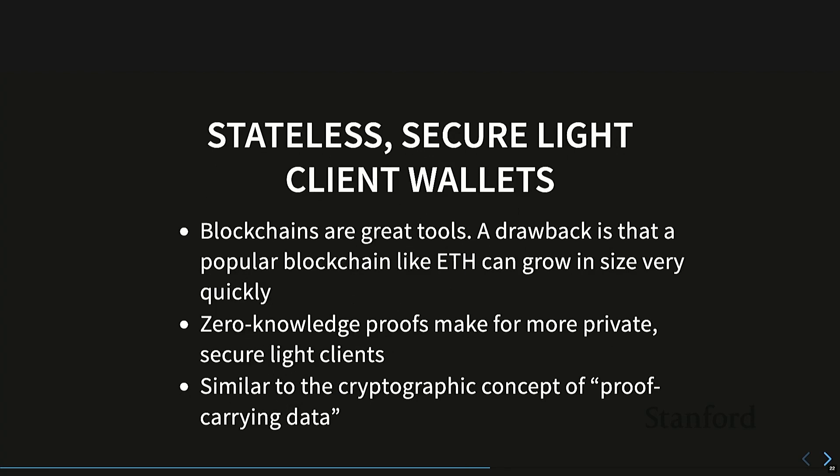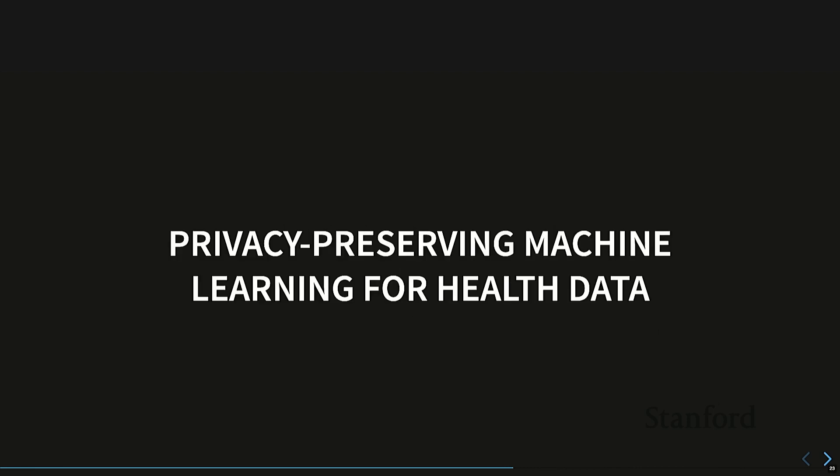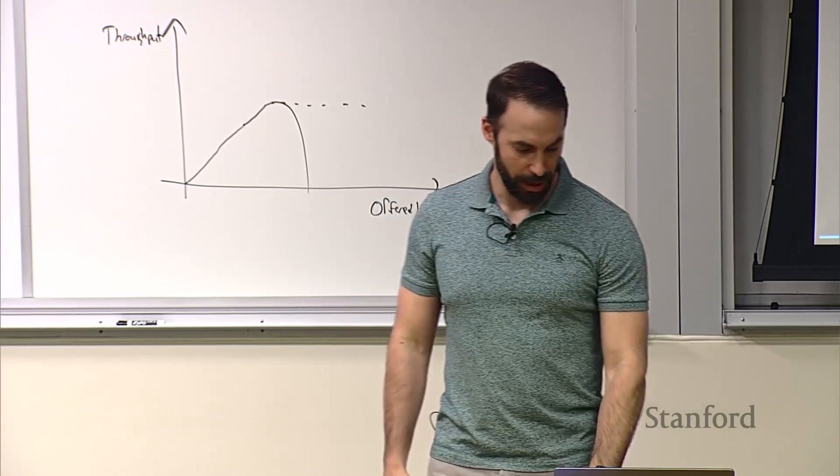Stateless secure clients and wallets: Mina protocol, for example, uses zero-knowledge proofs to compress — specifically compressing the state of the whole blockchain. They came up with this interesting idea where you can recursively prove all the way back to the genesis block that everything up to that point is correct. All a light client has to hold is a small 22-kilobyte proof, wherein you can know the state is correct. This is a great primitive tool for building bridges and more secure light clients. You can also imagine applying zero-knowledge to machine learning algorithms — either the output you receive from the algorithm has a proof, or you can prove you gave the algorithm some data and got a certain output, which is probably really relevant for health data.